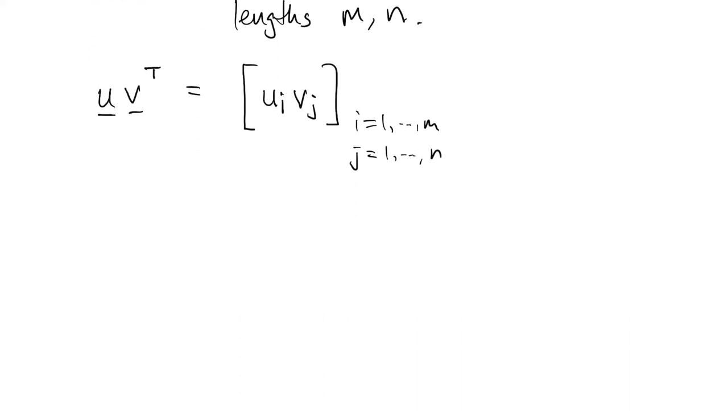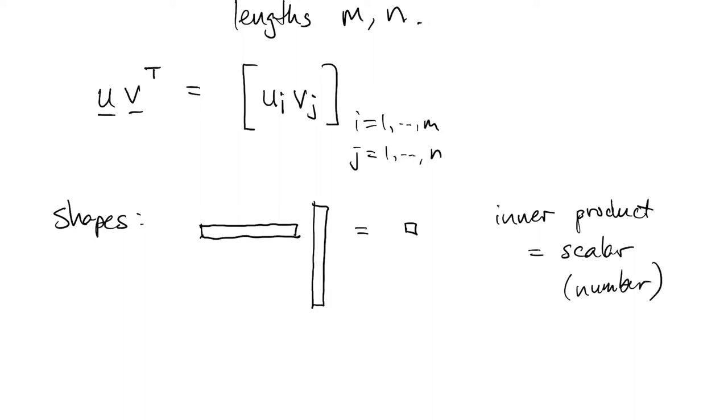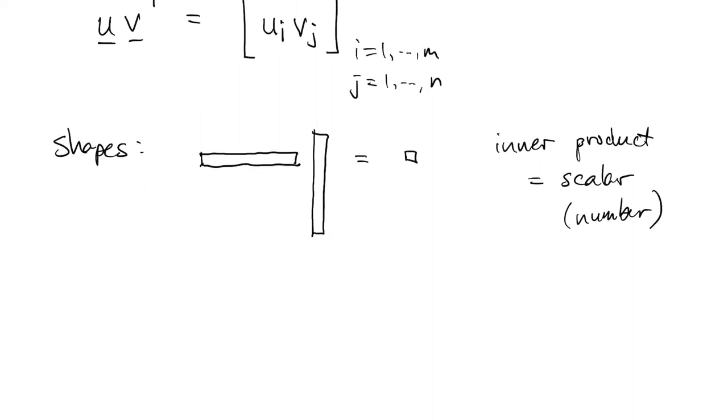It can be useful to think about the shapes of what's going on here. In the inner product, you have a row times a column, because we transposed the first one. The result is just a number, or what we call a scalar. With the outer product, you have a column times a row, and the result has the dimensions that are the outer dimensions of those two vectors. So it's a matrix.